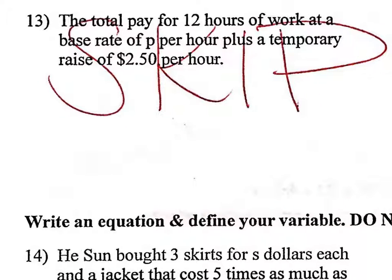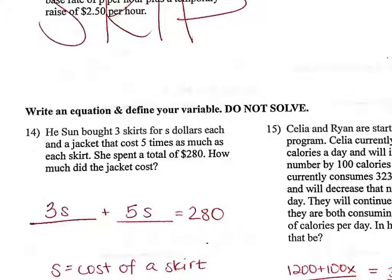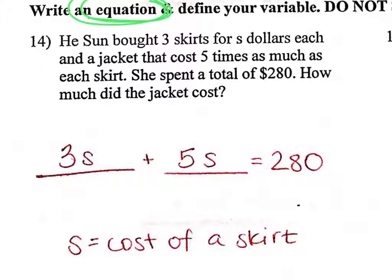Notice the directions on questions 14 and 15 say 'write an equation,' which means I need an equal sign in my final answer. Question 14: he bought three skirts for S dollars and a jacket, and the total was $2.80, so blank plus blank equals $2.80. Three skirts at S dollars each is 3S. She bought one jacket that is five times the cost of a skirt, so that's 5S. Check and make sure you have the same for question 14.